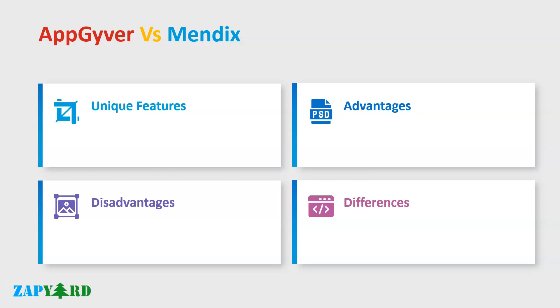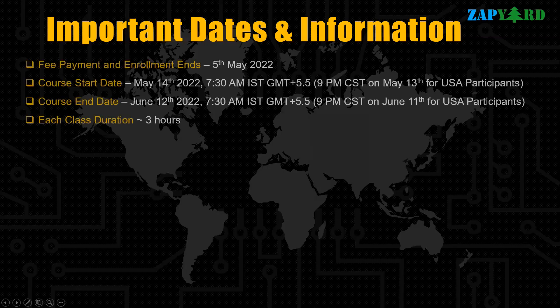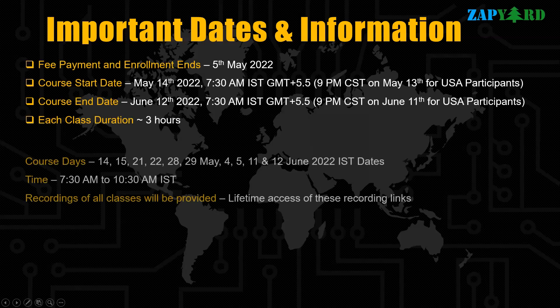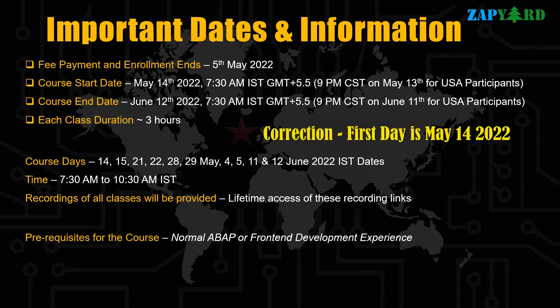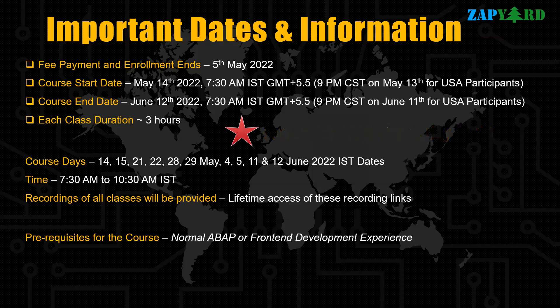Trust us, no one teaches such niche topics better than SAP Yard. Let us look into some important day, time and other information. The first day of the training is on May 7, 2022 at 7:30 am IST. This time is GMT plus 5.5 hours.